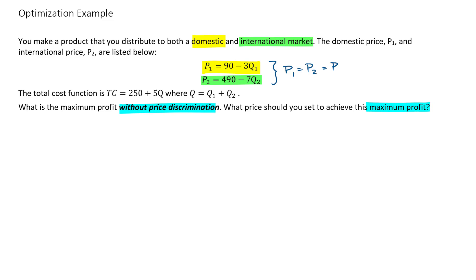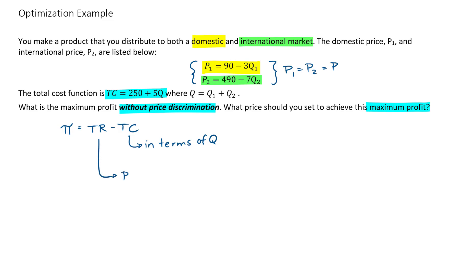So now we're going to try to come up with a profit equation. It's going to be a little bit complicated. If we're going to come up with a profit equation, we're going to need our total revenue minus our total cost. We have a total cost function in terms of Q. If I were to work with the revenue equation — price times quantity — I would be looking at two different quantities.